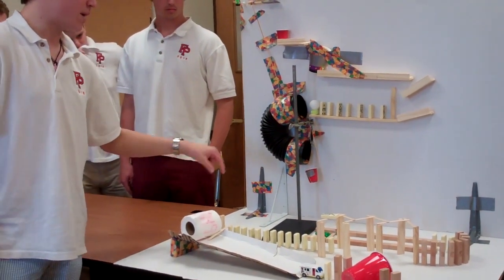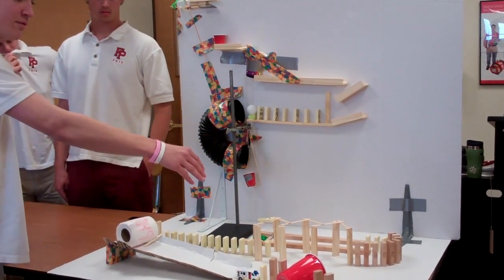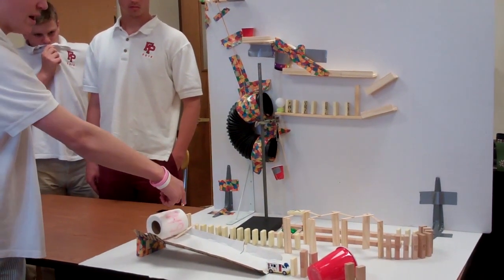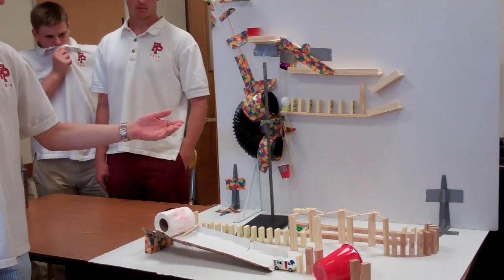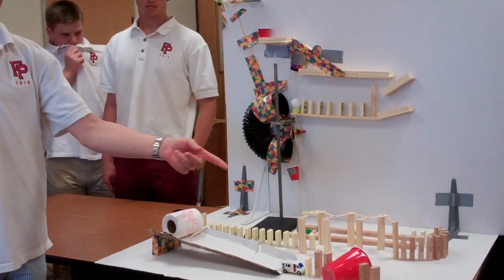Once the popsicle stick lifts up, the car, which is like a wind up car, goes, hits the dominoes, hits these so the popsicle sticks fall causing that top domino to fall, knocking over all these dominoes and knocking over this popsicle stick which releases like a wheel into the toilet paper, into the car, into the dominoes, into the cup, and into the mousetrap.